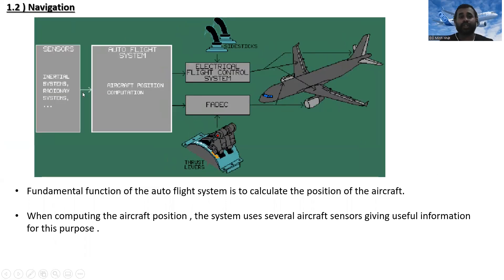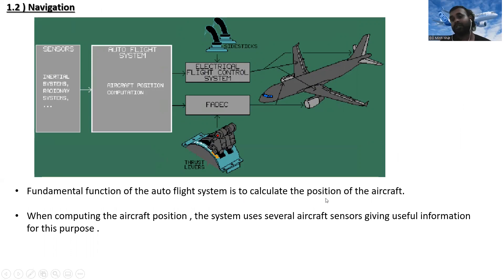The next topic is navigation. The sensors — inertial systems and radio navigation systems — provide aircraft position computation within the auto flight system. The fundamental function of the auto flight system is to calculate the position of the aircraft. When computing the aircraft position, the system uses several aircraft sensors that provide useful information for this purpose.